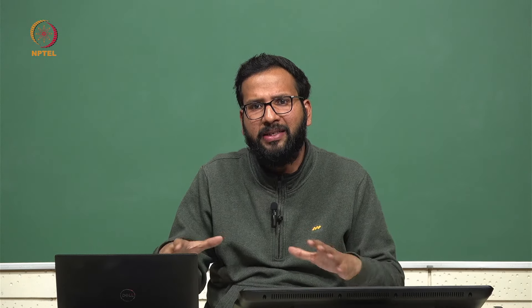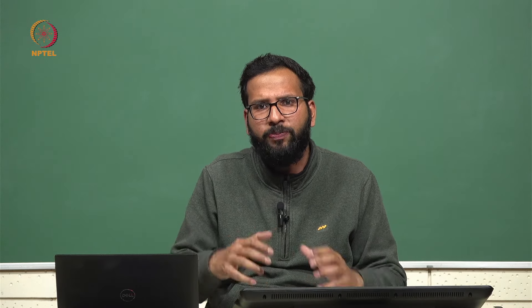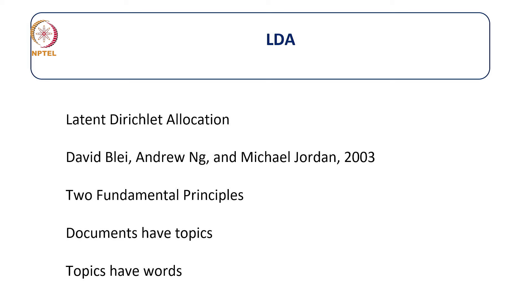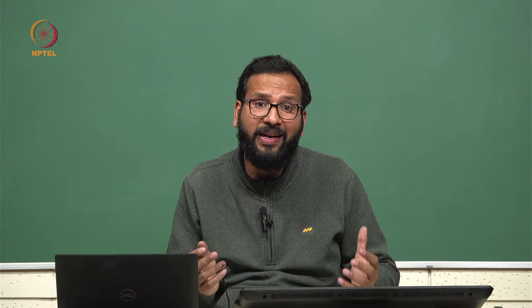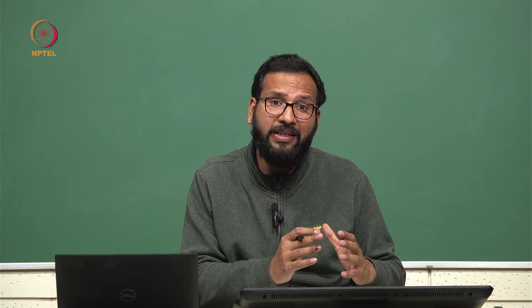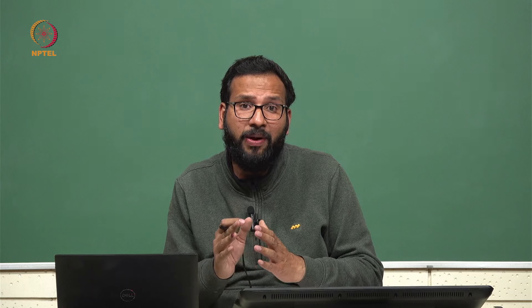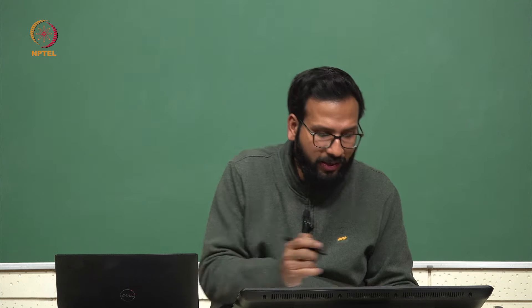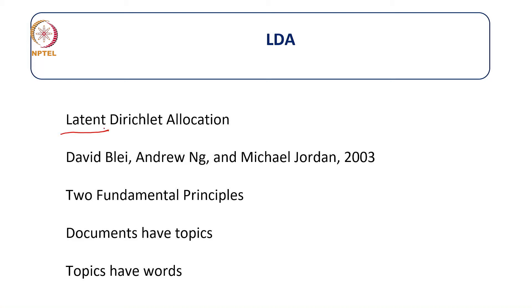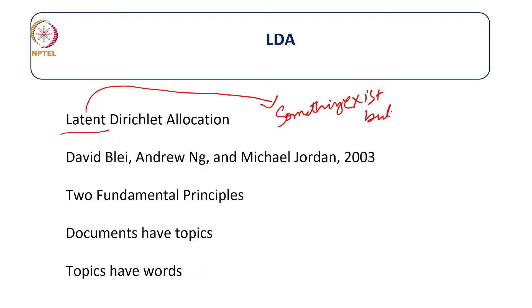To do the topic modeling, we have different models, but LDA is one of the most popular models. LDA stands for Latent Dirichlet Allocation. Latent means that something exists but is unknown to us — in our context, the topics are unknown to us.